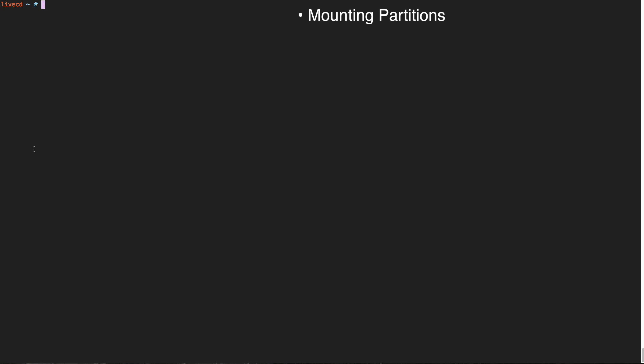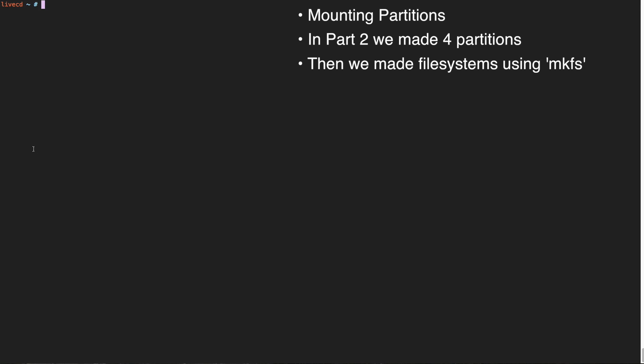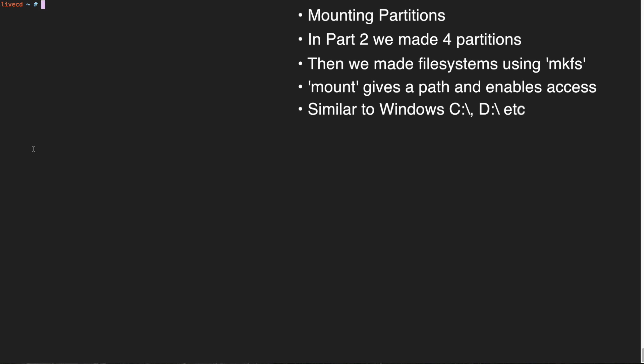The first step is going to be to mount the partitions. In the last video we made partitions which divided the disk into four sections, and then we put file systems on those partitions so that we know how to read and write to it in an organized manner. Now we're going to mount those partitions, which means give them a path name. If you're familiar with Windows, you have the C drive. In the same way, when we mount something somewhere, we're just giving it a name like C, although with Unix-type systems the names are much more explicit and well-defined — they're not just an arbitrary A through Z. You can name them whatever you want.